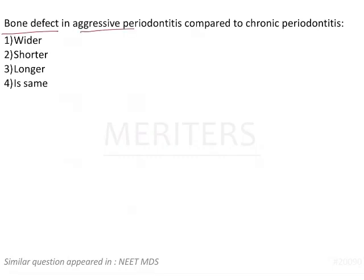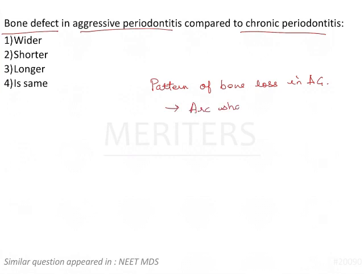We are talking about the pattern of bone defect in aggressive periodontitis as compared to chronic periodontitis. In aggressive periodontitis, there is a very typical arc-shaped bone loss associated with the first molar.